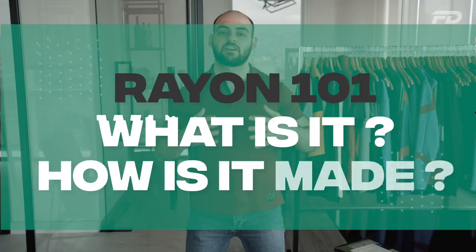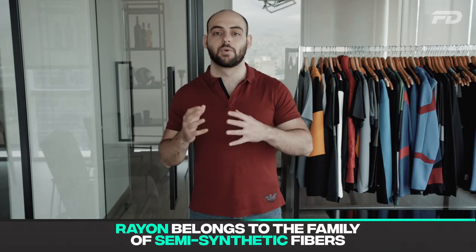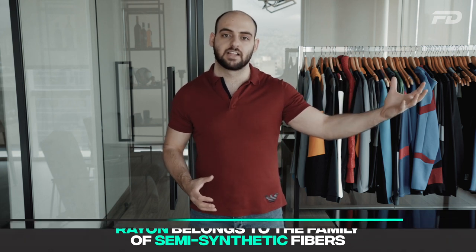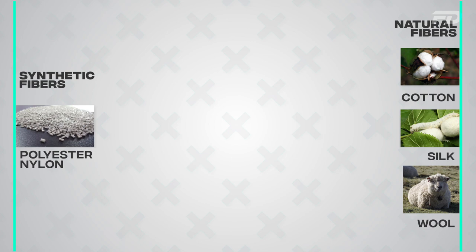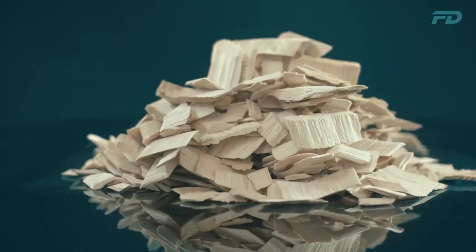Before we start discussing rayon, we have to understand that rayon is part of a wider family of fibers called semi-synthetic fibers. We already know we have a natural family of fibers like cotton, silk, and wool, and a synthetic family like polyester and nylon. Right in the middle are semi-synthetic fibers. Natural fibers are sourced from natural materials using natural processes; synthetic fibers are sourced from man-made materials using man-made processes. Semi-synthetic fibers are sourced at their base from natural resources like plants and vegetables, and then man-made processes are applied to create fibers that are woven or knitted into finished textiles.